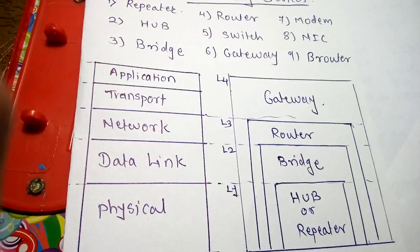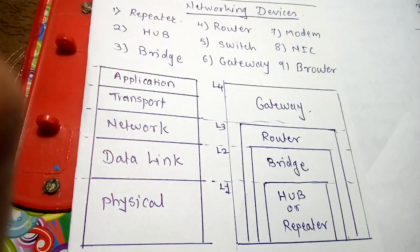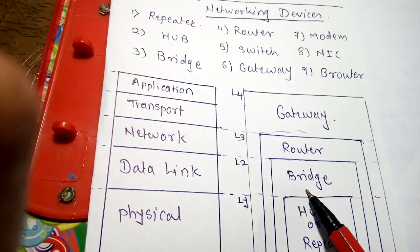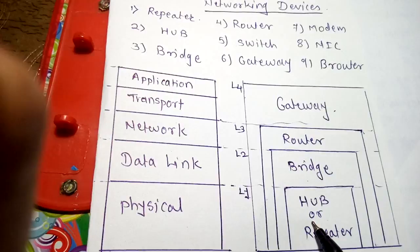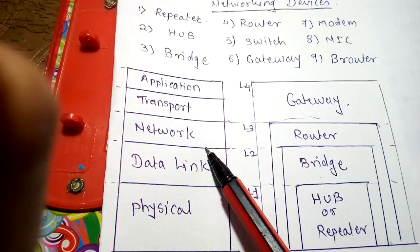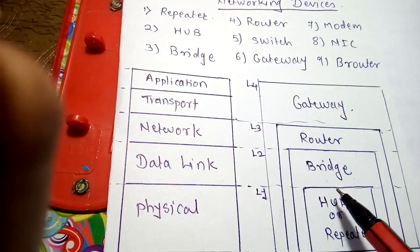If you see, the hub or repeater is present in the physical layer, that is layer 1. Bridge is present in layer 2, the data link layer. Router is at layer 3, the network layer. And gateway spans all layers up to the application layer.